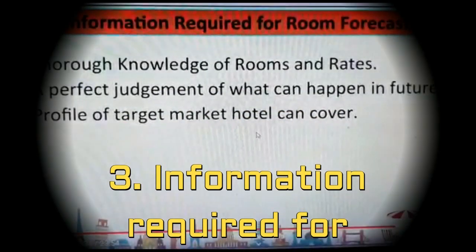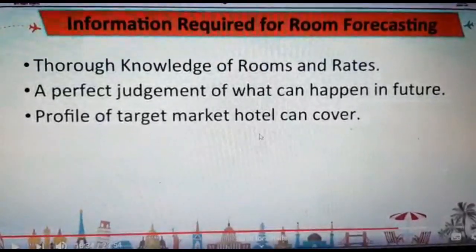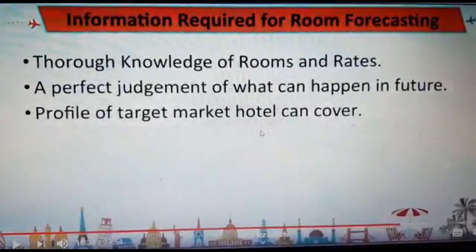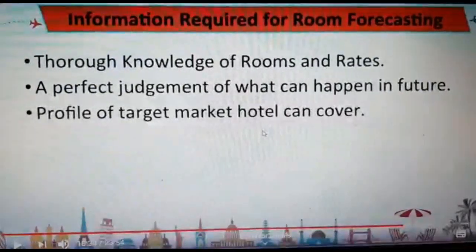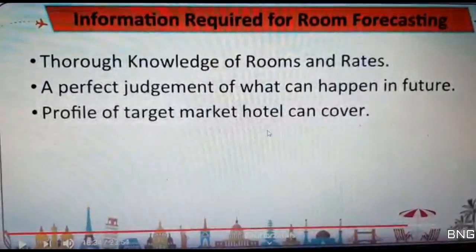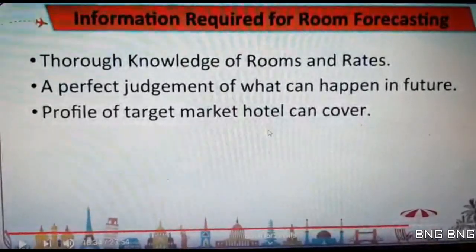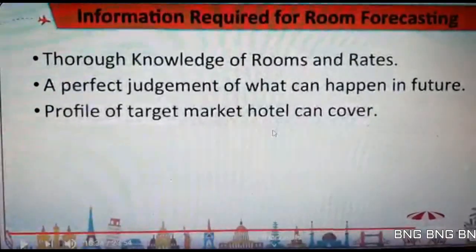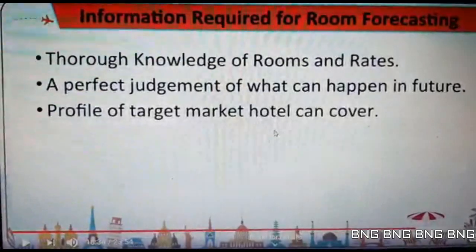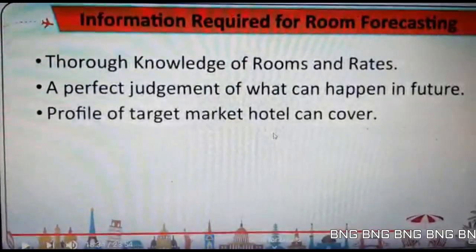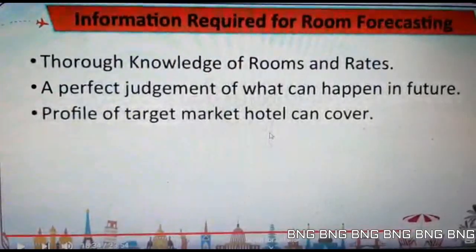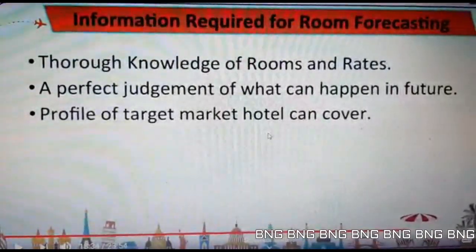Let us move on to the third part of your second unit. There are certain pieces of information required for forecasting to happen. Number one would be a thorough knowledge of rooms and rates — meaning the different categories, different types, and different rate methods that the reservation team can facilitate when charging the guest.